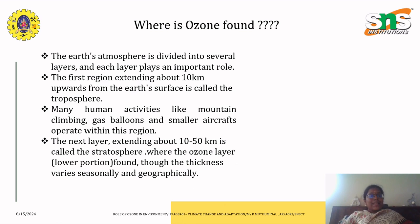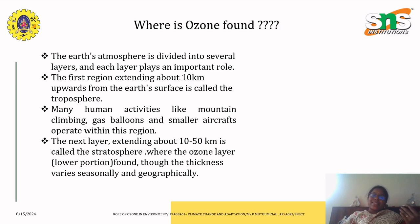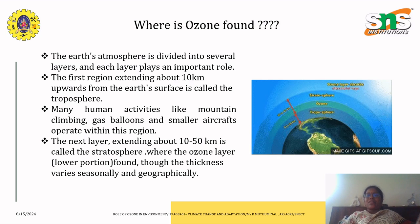The next layer extending from about 10 to 50 kilometers is called the stratosphere, where the lower portion of the ozone layer is found. Though the thickness varies seasonally and geographically, this is where the lower portion of the ozone layer is always available.